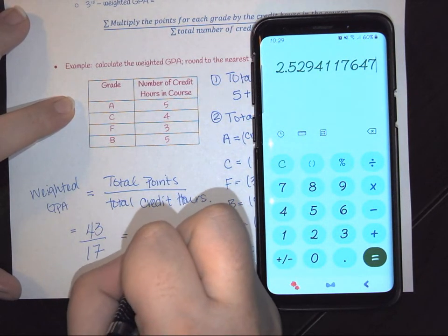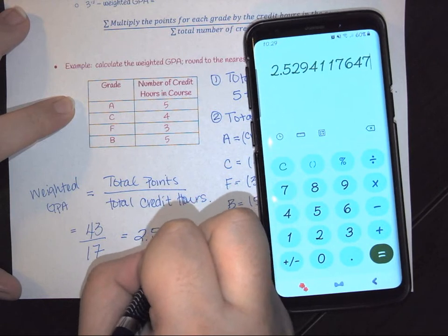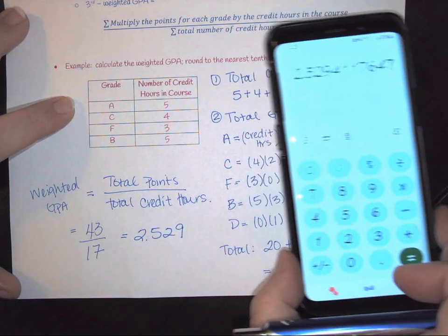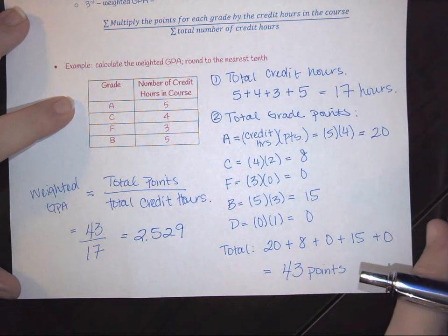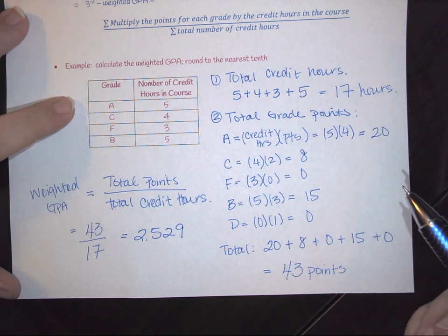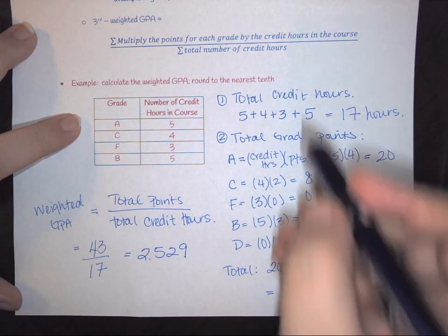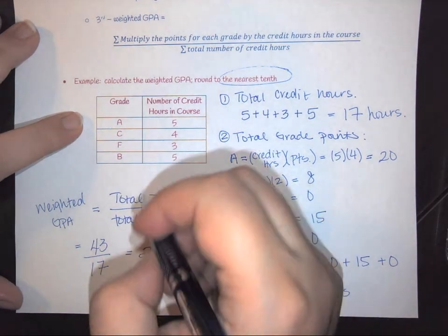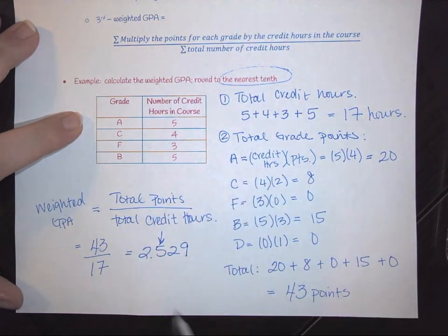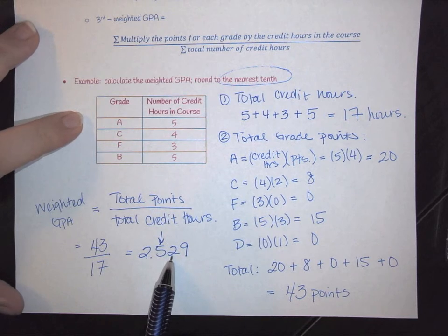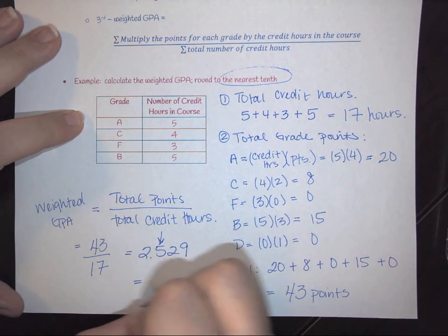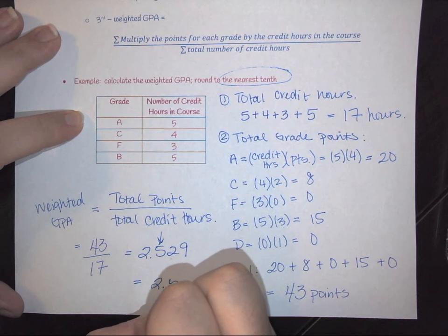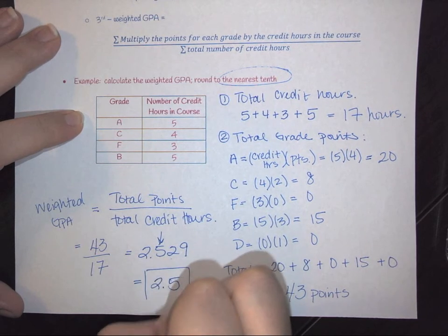And so here we're going to get 2.529. When we're looking at it, you always want to look and see if it tells you where to round to. In this case it does, it says nearest tenth. Nearest tenth is that first spot. Look at the one next to it, it's a 2. Two is less than five, so your weighted GPA is 2.5.